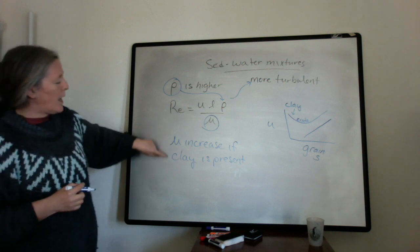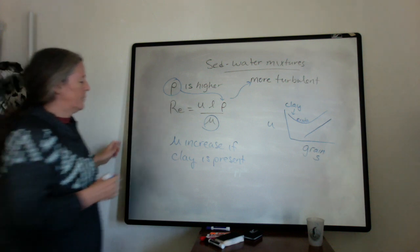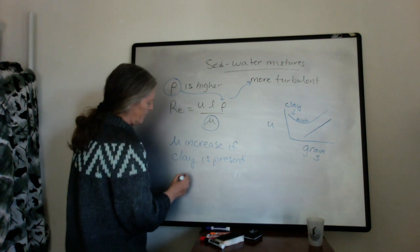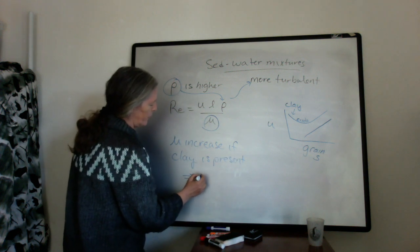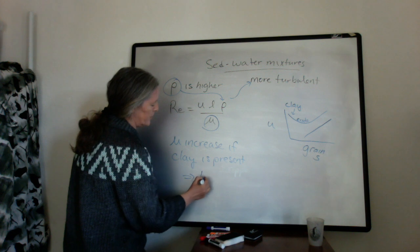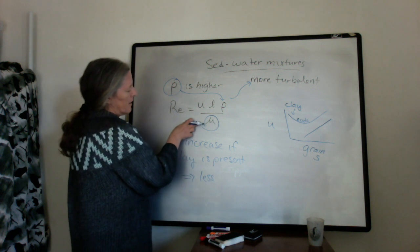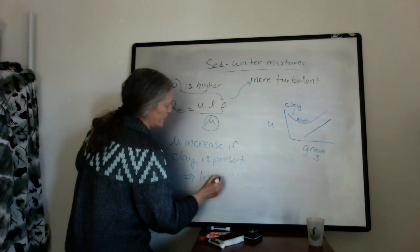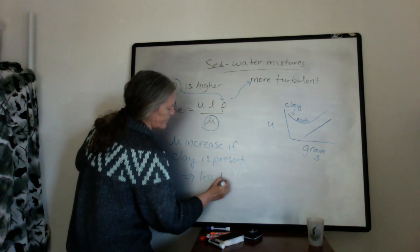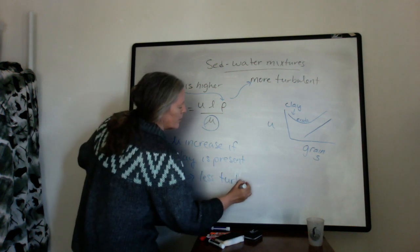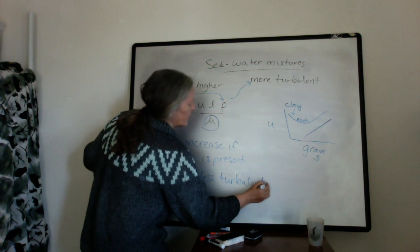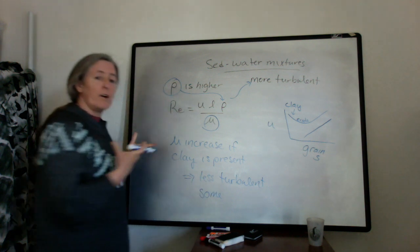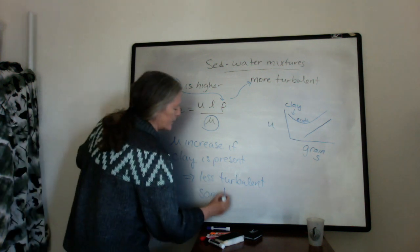So if you have a lot of clay in the sediment water mixtures, then the flows are less turbulent because the viscosity, an increase in viscosity reduces the Reynolds number. And if you have enough clay in the flow, sometimes the mud flows can actually be laminar.